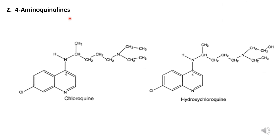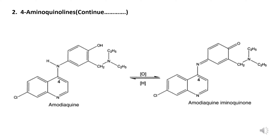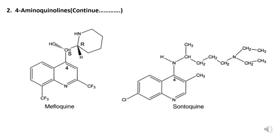The next category is 4-aminoquinoline derivatives. Examples include chloroquine and hydroxychloroquine. Amodiaquine is also a 4-aminoquinoline derivative. Mefloquine and santoquine are also examples of 4-aminoquinoline derivatives. You can see their structures on screen.